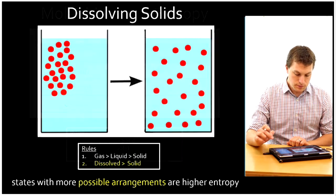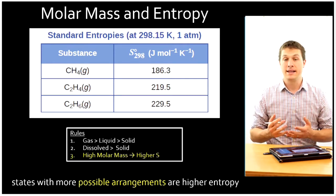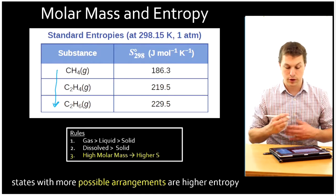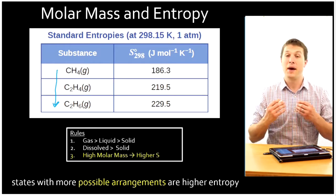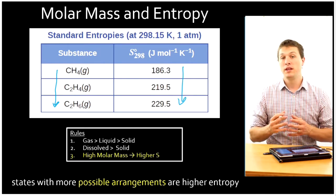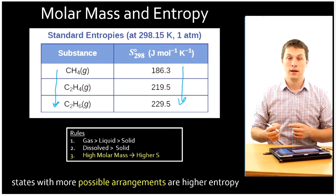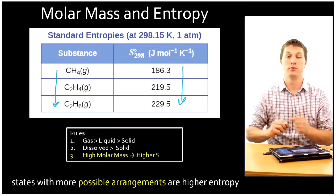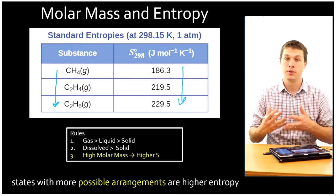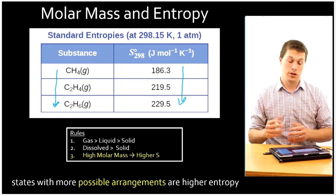Now let's take a look at molecules. As molecules get more massive, their entropy increases. Going down this list I'm adding carbons and hydrogens — from CH4 to C2H4 to C2H6 — adding atoms increases the molar mass, and the entropy is also increasing. We can think about the fact that higher molar mass molecules have more electrons racing all around, and more electrons can be arranged in all sorts of different ways. So the more atoms I have, the more electrons I have, the higher entropy I'm going to have.